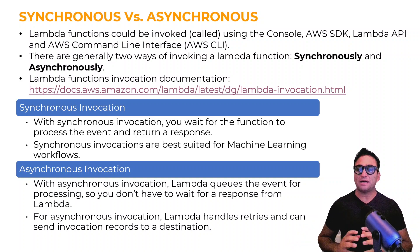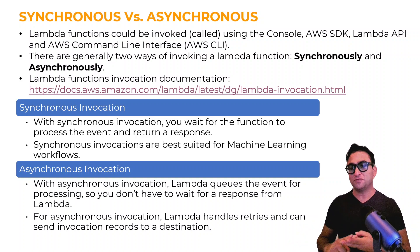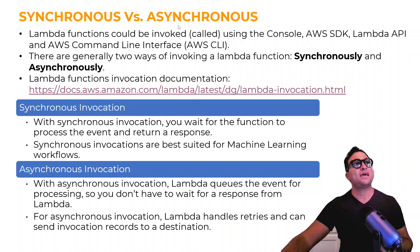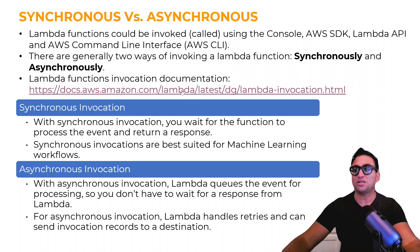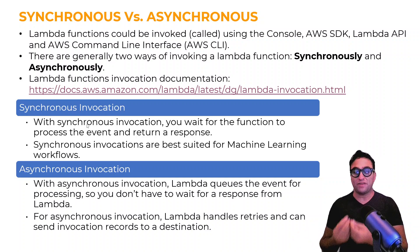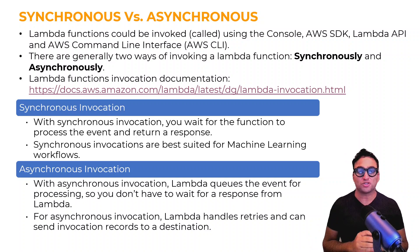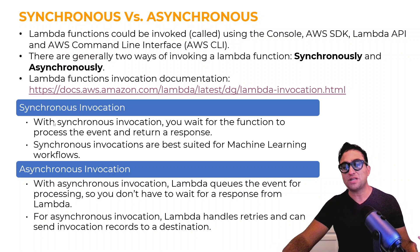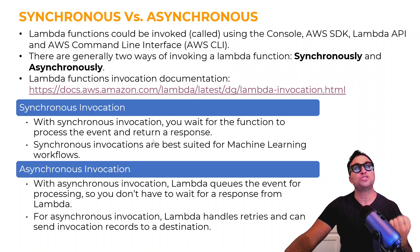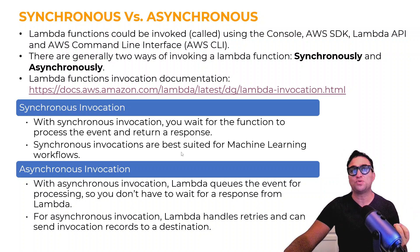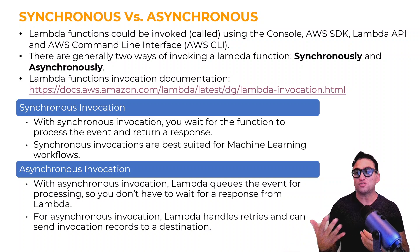In general, when you invoke Lambda functions there are two strategies. The first one is synchronous and the second is asynchronous. I've included a link to the documentation if you want to check it out. With synchronous invocation, the Lambda function is invoked and you wait for a response immediately. You invoke the function and you are expecting a response back — you wait for the function to process the event and return a response. Synchronous invocations are best suited for machine learning workflows.